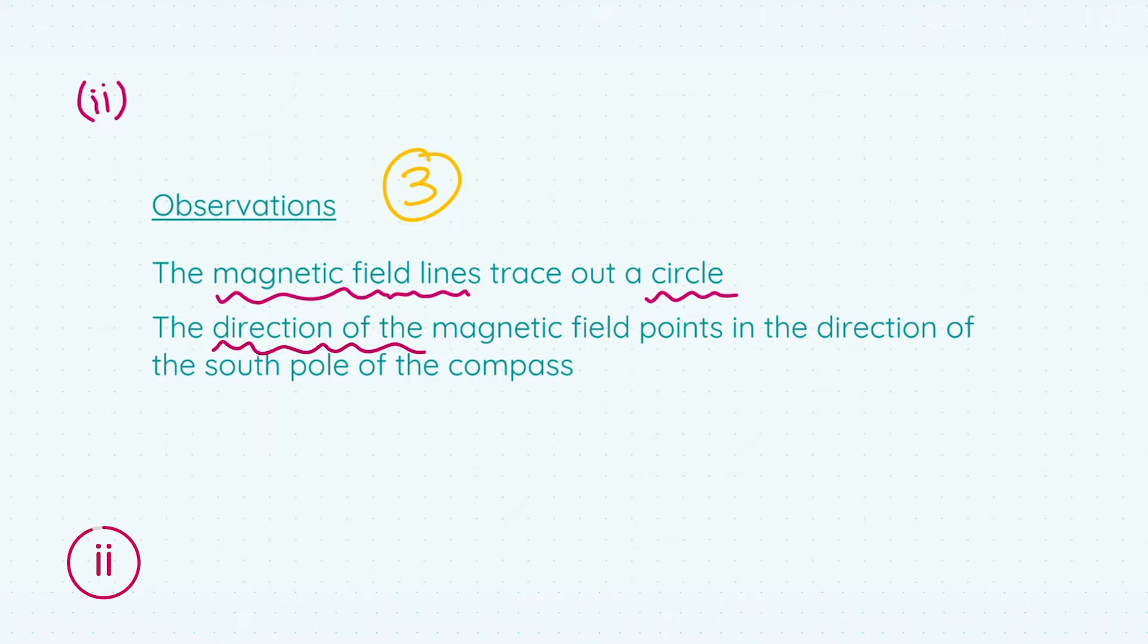The next observation will be talking about the direction of the magnetic field, and it points in the direction of the south pole of the compass, and this is true as we've seen in the example with our bar magnet.